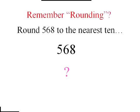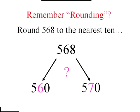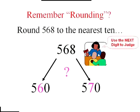So we're either going to have 560, the same digit for the tens, or 570, the next larger one. We never go down. Now how are we going to decide? We use the next digit. The next digit is 8 and that's more than halfway so we're going to go up. The answer is going to be 570.